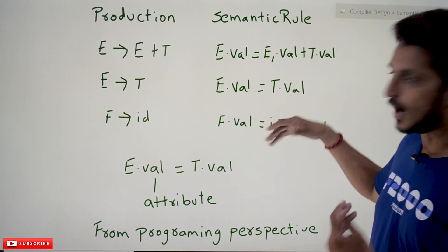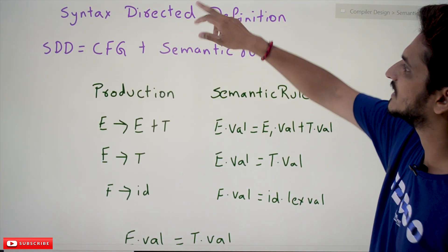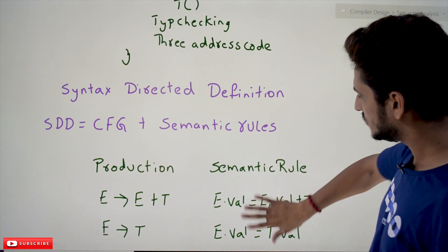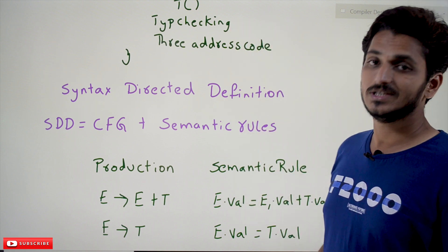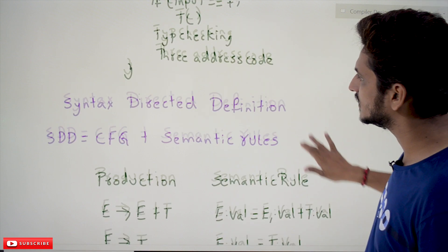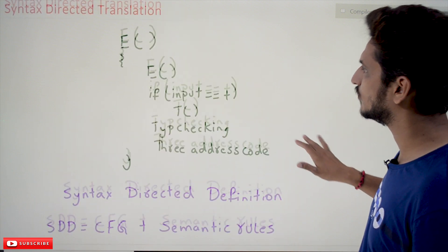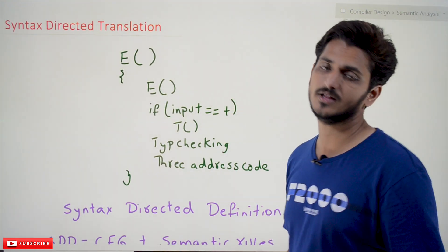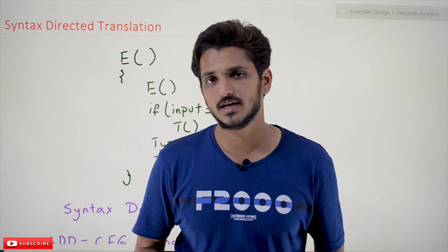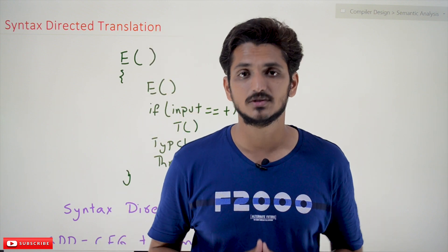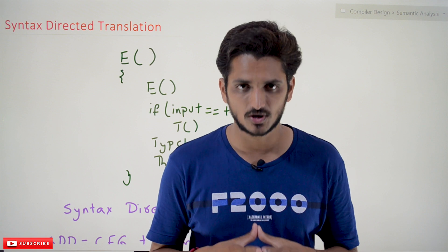These semantic rules are implemented in the coding. This is the terminology you have to understand: what's syntax directed definition, what's syntax directed translation, and what's attribute. We are going to use this terminology in our next classes. Hope you understand. If you have any questions regarding the concept, please post them in the comment section below.